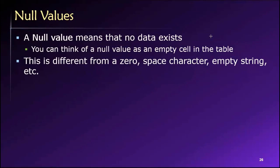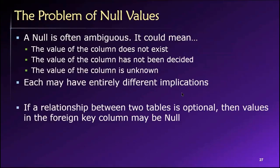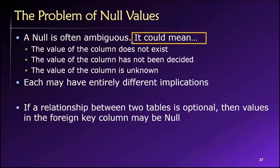Null values in the relational database world are a bit tricky because they can be ambiguous. What I mean by that is that if a value in a table is null — there's an empty cell — it may be empty for several different reasons. This is where the ambiguity comes from: why is this value missing? Why is there no value in this cell?